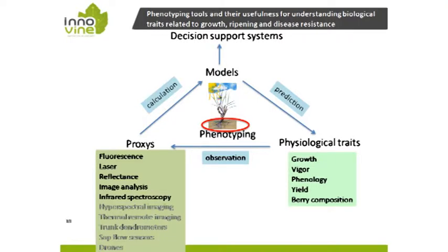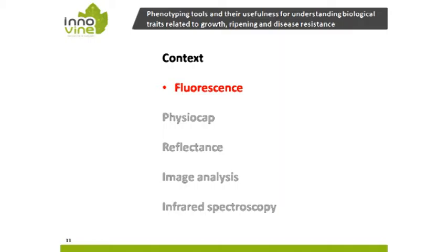In the Inovine project, various tools were used: fluorescence, laser, reflectance, image analysis, infrared spectroscopy, hyperspectral imaging, thermal remote sensing, and so on. I will concentrate on the five top tools and give some details. These were used to phenotype physiological traits including growth, phenology, yield, and berry composition. I will start with fluorescence.